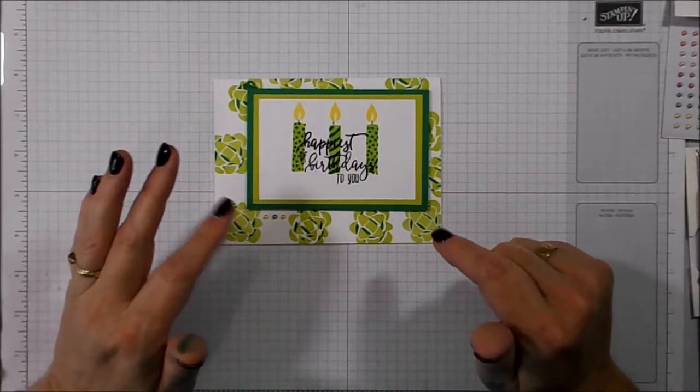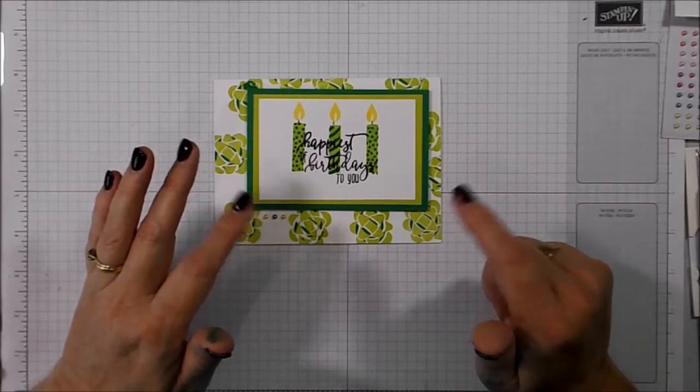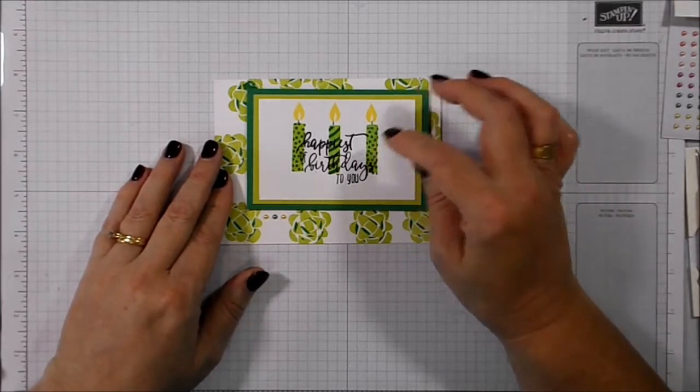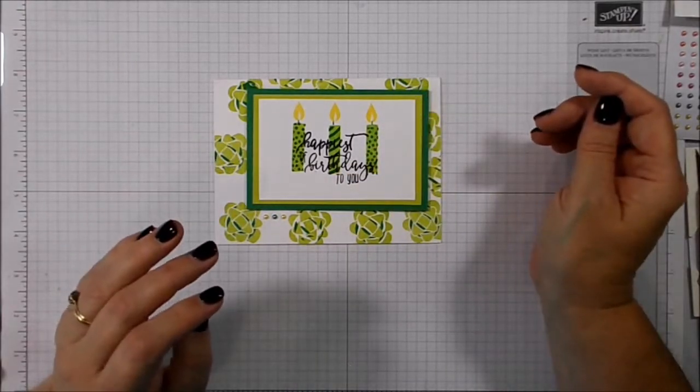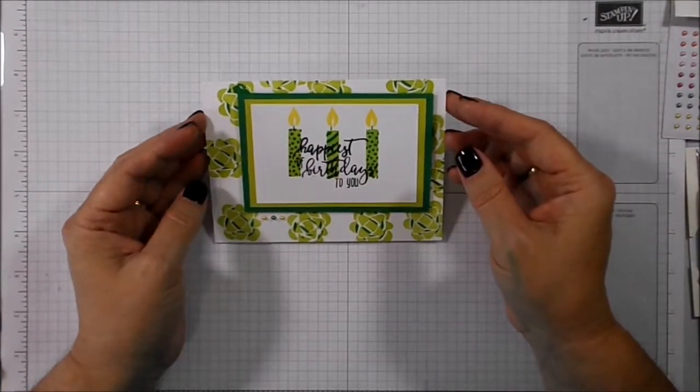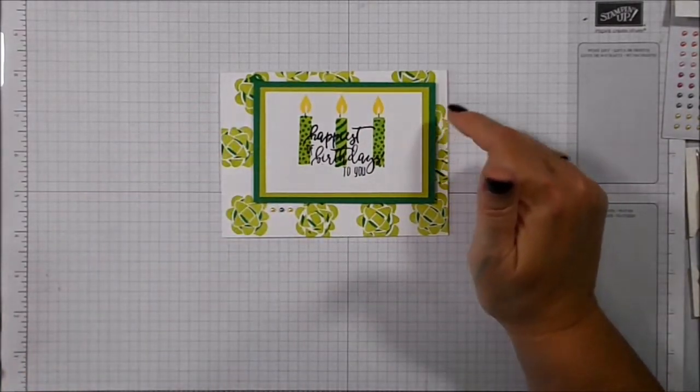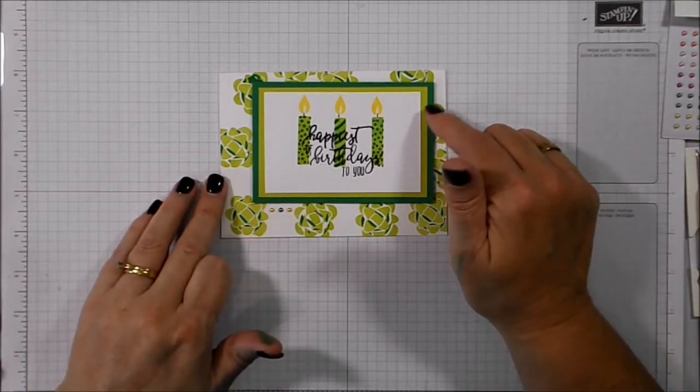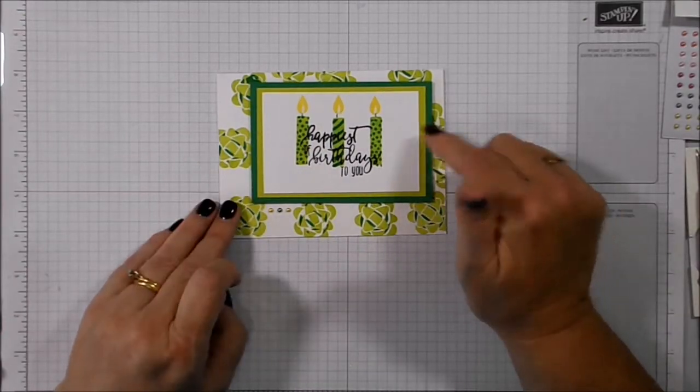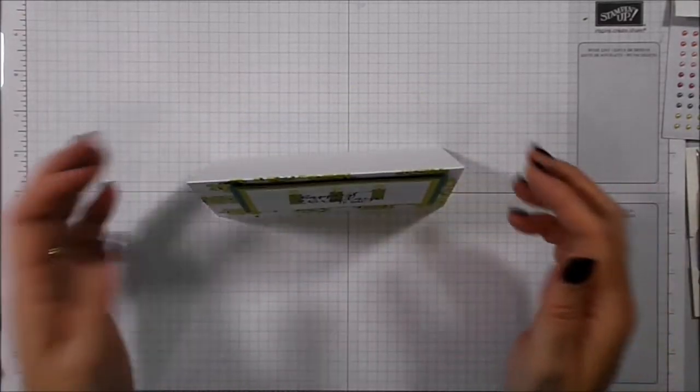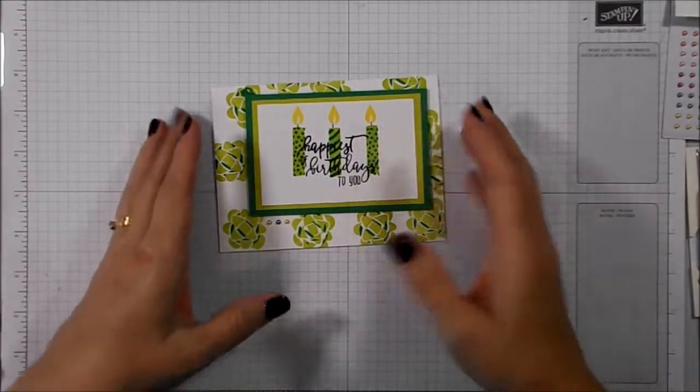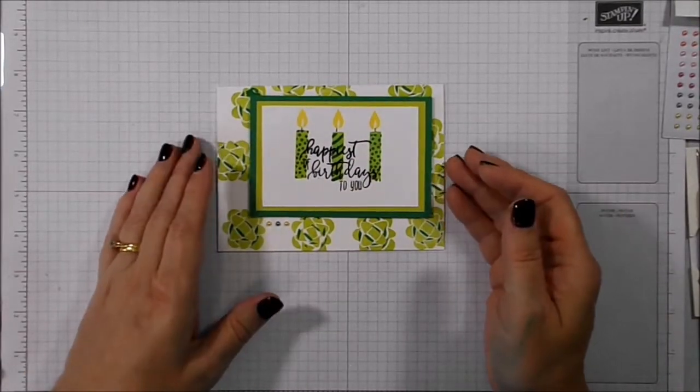We're using four colors of ink. We've got Pineapple Punch, Lemon Lime Twist, Call Me Clover and of course the Basic Black Memento ink. I'm also using just scraps of the Call Me Clover and Lemon Lime Twist and I've got the two Whisper Whites. The heavyweight for the card base and just the layering weight, the original Whisper White for the top layer.